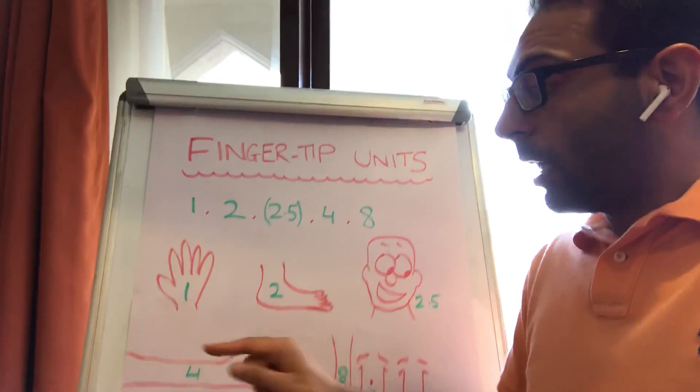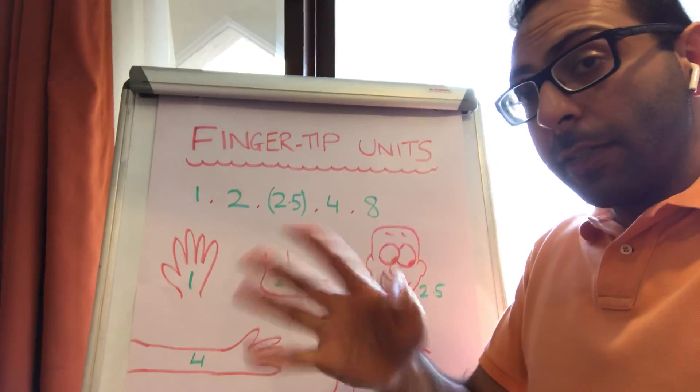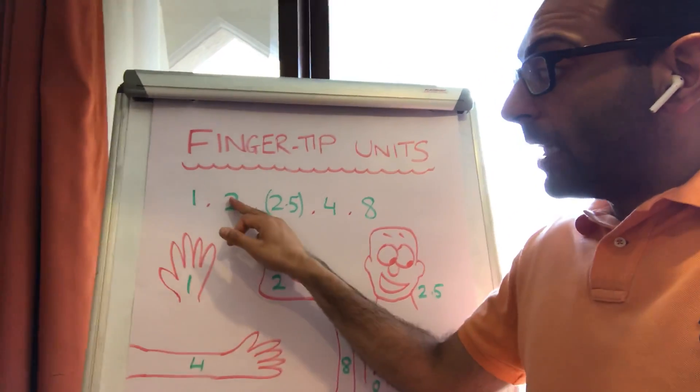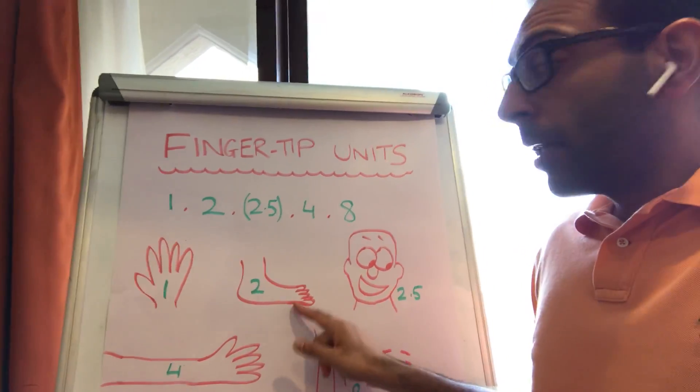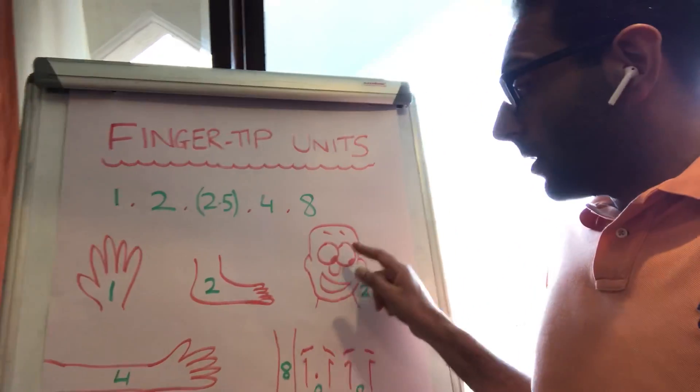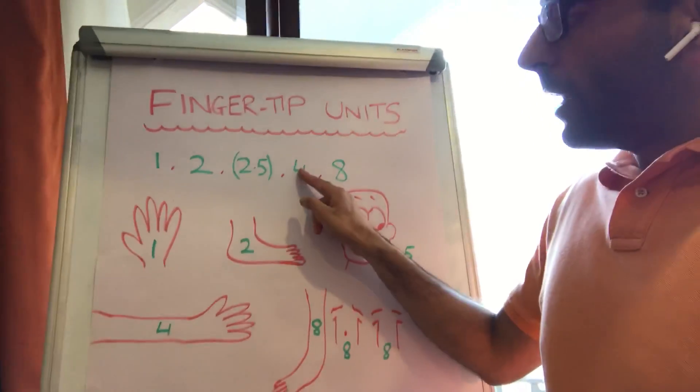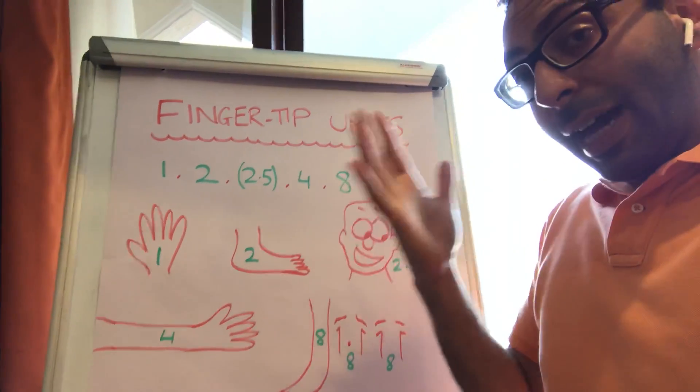So one FTU, one fingertip unit will cover someone's hand, their fingers, front and back. Two fingertip units will cover someone's foot. Two and a half fingertip units will cover someone's face and someone's neck. Four fingertip units will cover someone's arm and their hand.